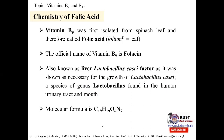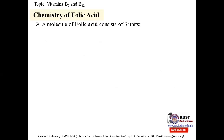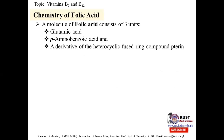The molecular formula of folic acid is C19 H19 O6 N7. A molecule of folic acid is basically composed of three components: glutamic acid, linked to para-aminobenzoic acid, and a derivative of a heterocyclic fused ring known as pterin. These three moieties are linked together in the folic acid structure.